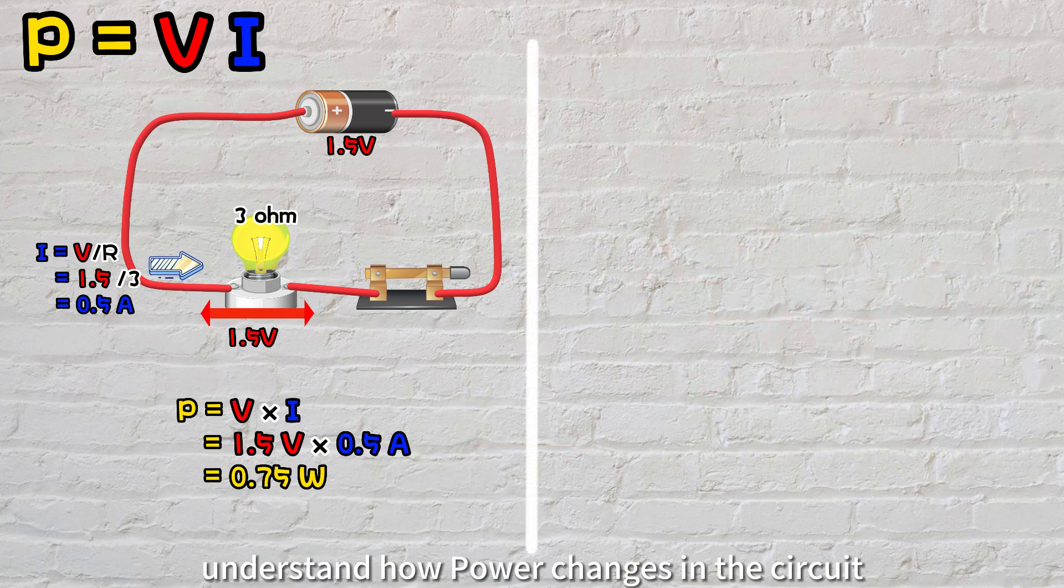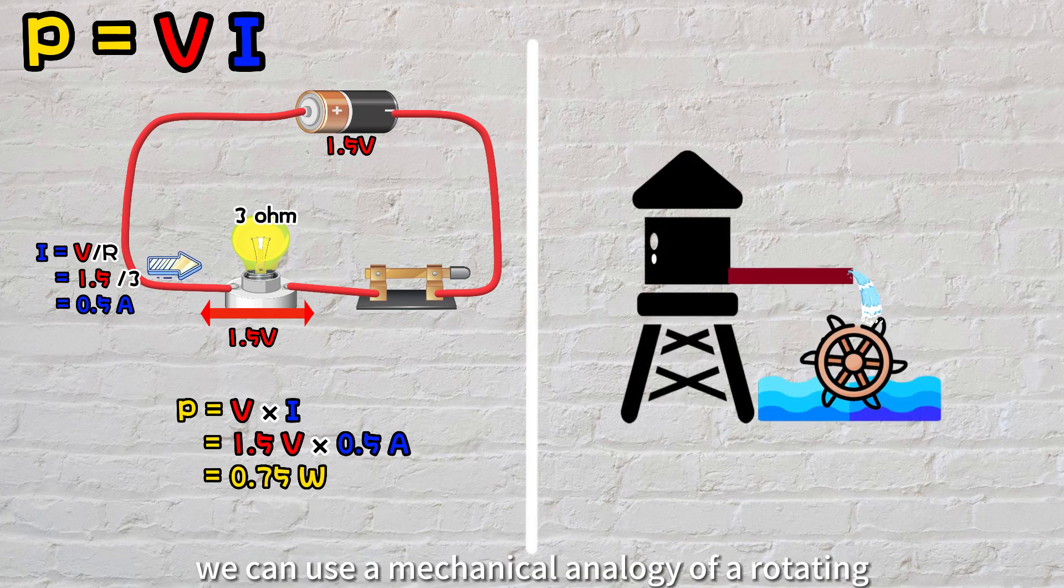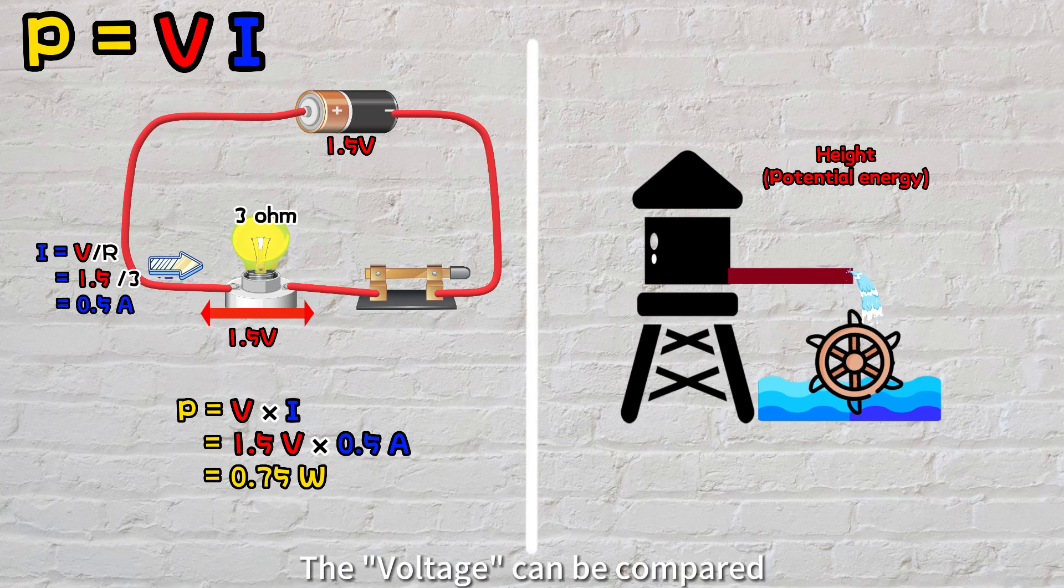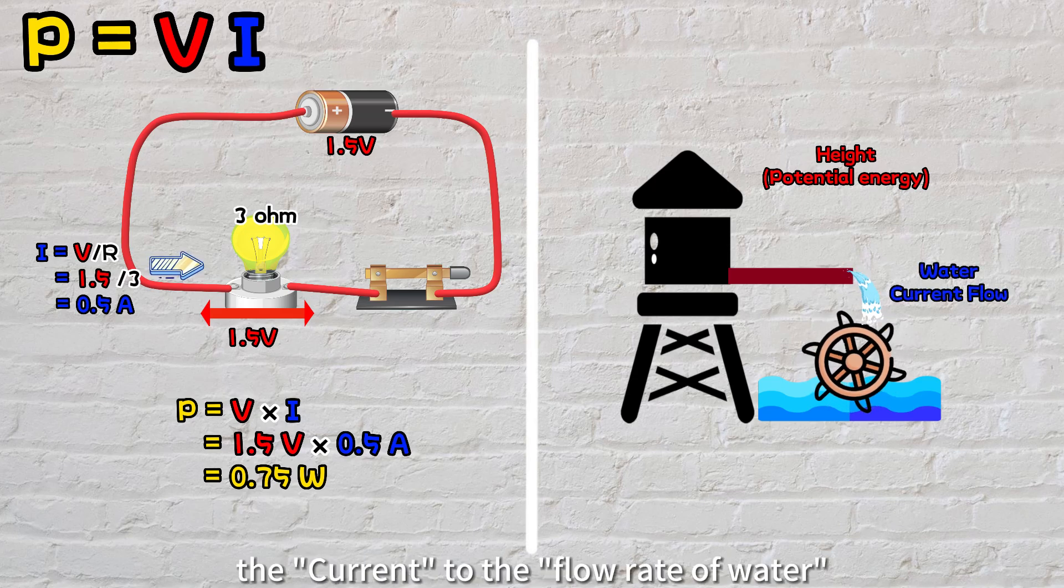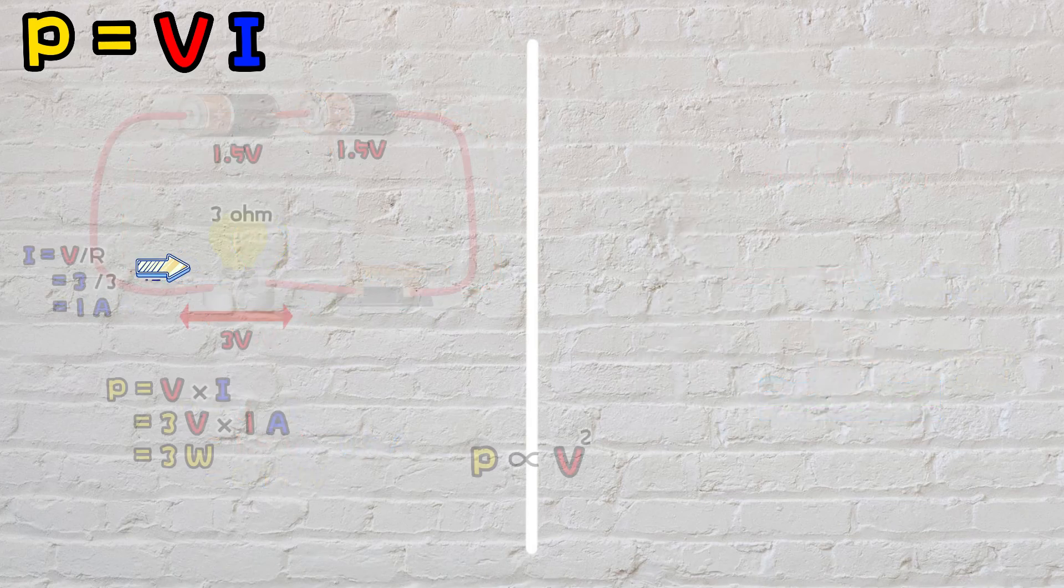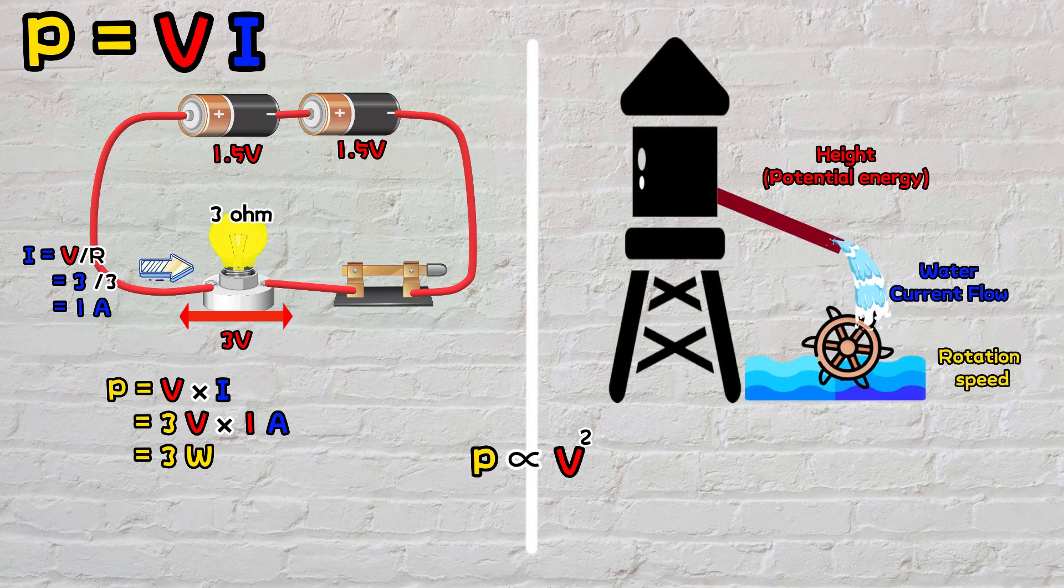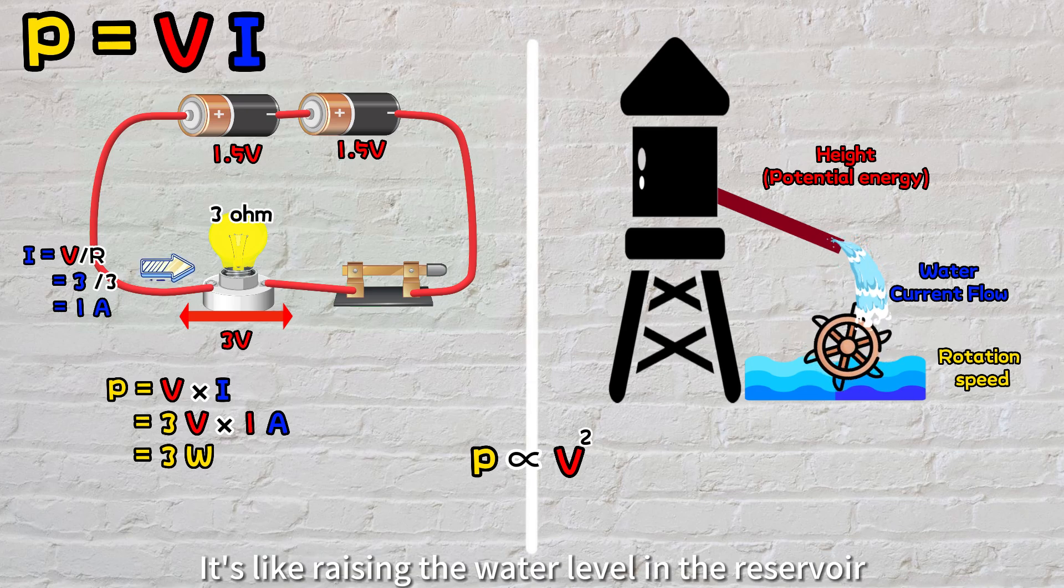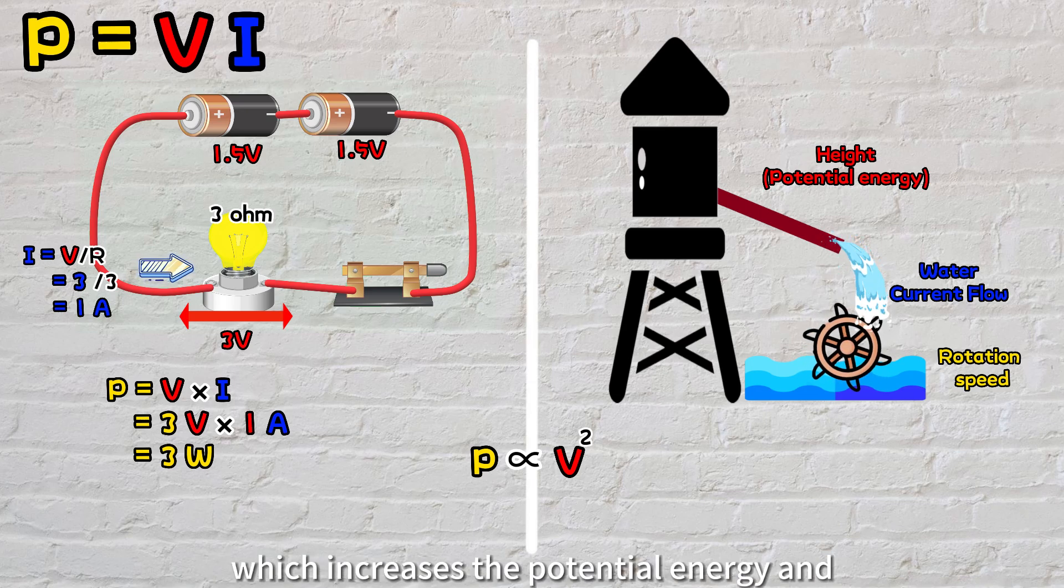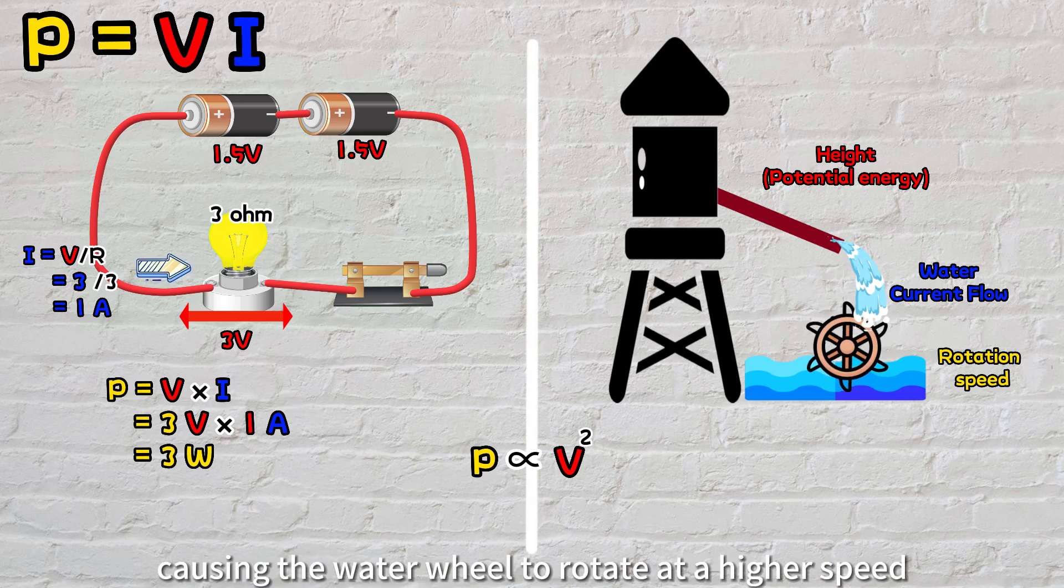To better understand how power changes in the circuit, we can use a mechanical analogy of a rotating water wheel. The voltage can be compared to the height of a reservoir, the current to the flow rate of water, and power to the rotation speed of a water wheel. For instance, if we increase the voltage in the circuit, the power consumption also increases. It's like raising the water level in the reservoir, which increases the potential energy and makes the current flow faster, causing the water wheel to rotate at a higher speed.